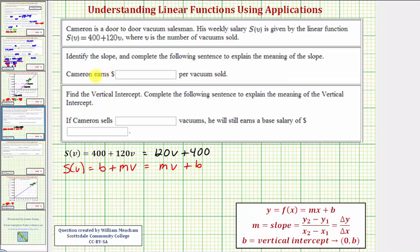Our first question asks us to identify the slope and complete the following sentence to explain the meaning of the slope. So whichever form we use, notice how the slope m is equal to 120. To understand what this means though, it's helpful to have the slope in a fraction form. So let's write the slope as 120 over 1.